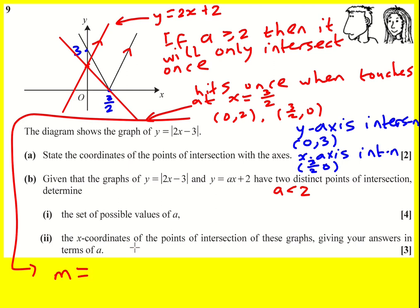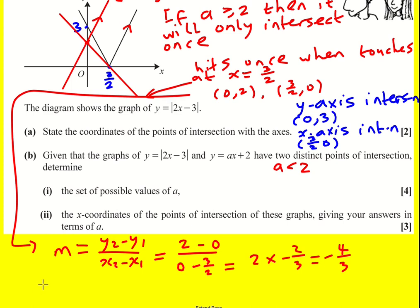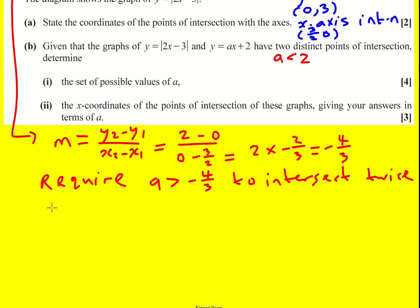Therefore, the gradient at this point is going to be y2 minus y1 over x2 minus x1: 2 minus 0 over 0 minus 3 over 2. That's going to become 2 times minus 2 over 3, or minus 4 over 3. That's all I'm interested in. I require the gradient to be bigger than that. Therefore I'm done. I just need to put it all together. Overall, minus 4 over 3 is less than a which is less than 2.